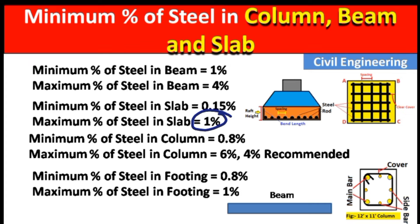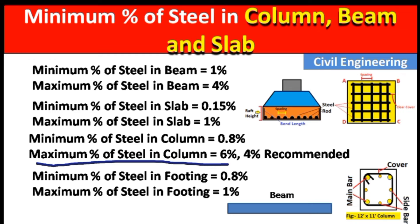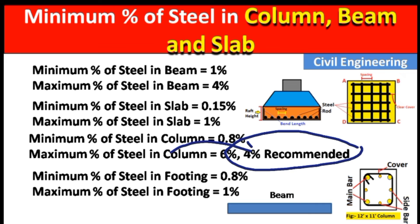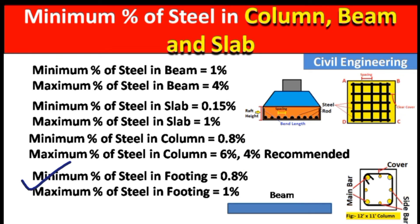In a column, the minimum percentage of steel is 0.8 percent and the maximum is six percent. However, IS code recommends that practically you should take a maximum of four percent steel in a column, because beyond that it creates difficulties in placing the concrete.